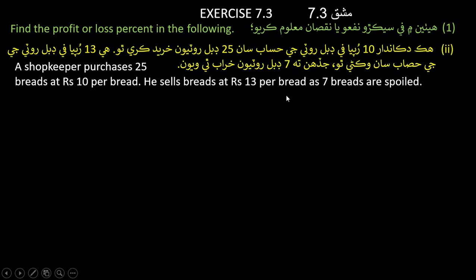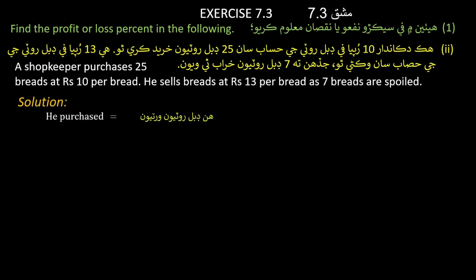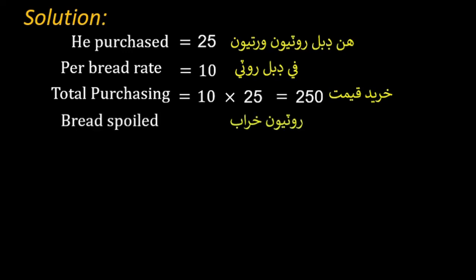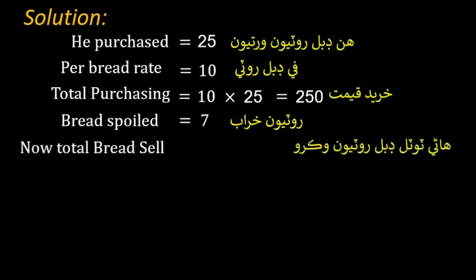Problem 2: A shopkeeper purchases 25 breads at 10 rupees per bread and sells them at 13 rupees per bread, but 7 breads are spoiled. Total purchasing cost is 10 × 25 = 250 rupees.